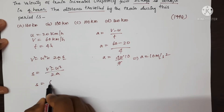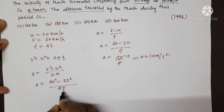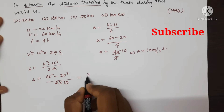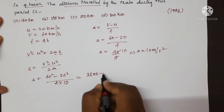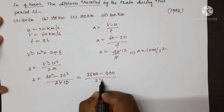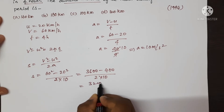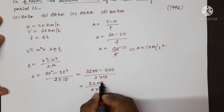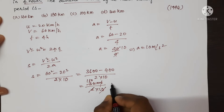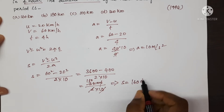V² = 60² = 3600, U² = 20² = 400, and 2A = 2 × 10 = 20. So S = (3600 − 400) / 20 = 3200 / 20 = 160. The value of S is equal to 160 km.